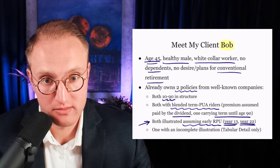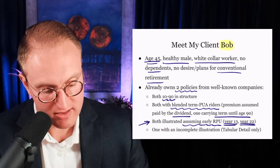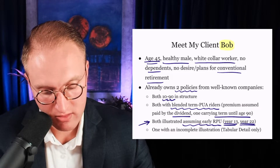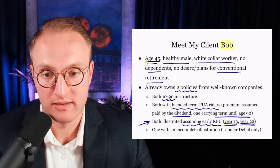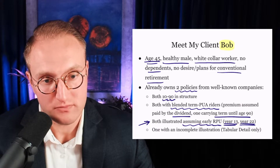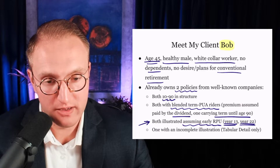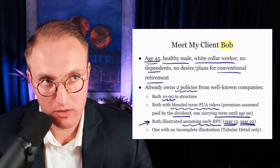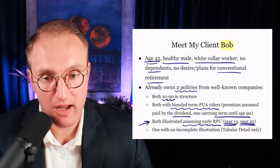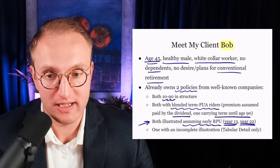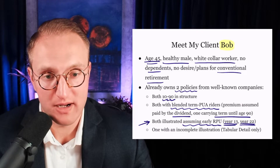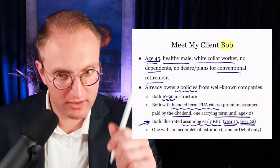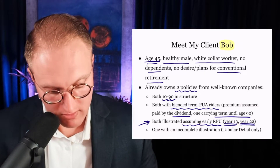So when Bob is 57 and when Bob is 66 years of age, we're going to assume that we just shut off the ability to pay premium. White-collar worker, meaning not a laborious or physically intense job — intellectual work — and no plans to retire. But we're going to shut the premium off.